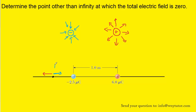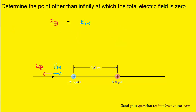We can call the electric field produced by the negative charge E_negative and the one produced by the positive charge E_positive, and we want their magnitudes to be equal. The equation for an electric field produced by a point charge is E = k|q|/r². We need to add a label to our diagram: we call the unknown distance from that zero-field point to the negative charge x.